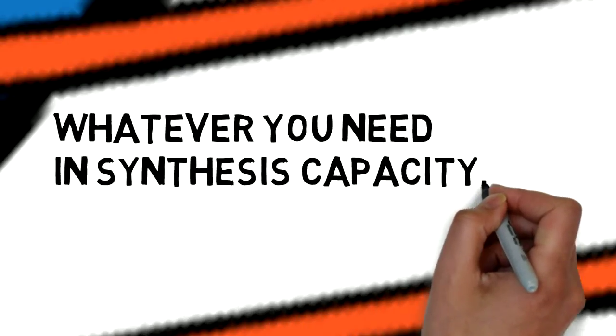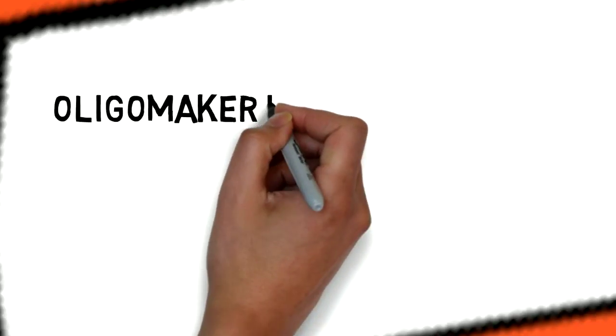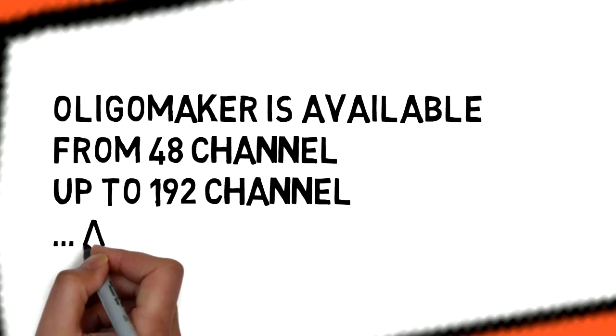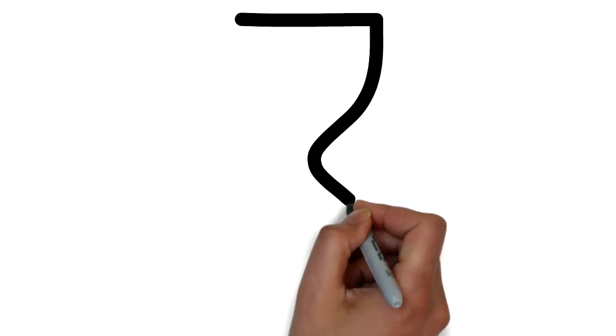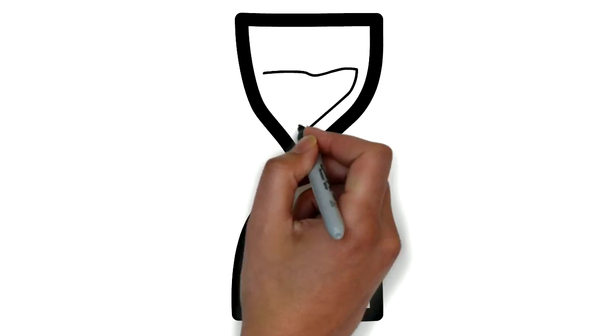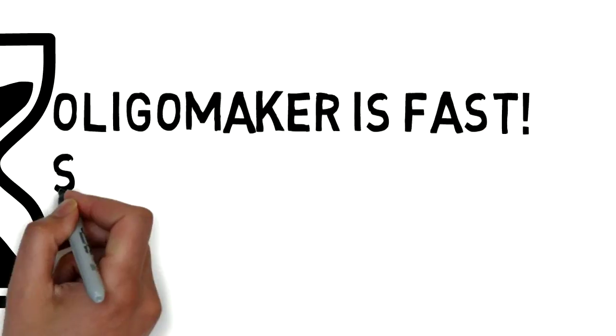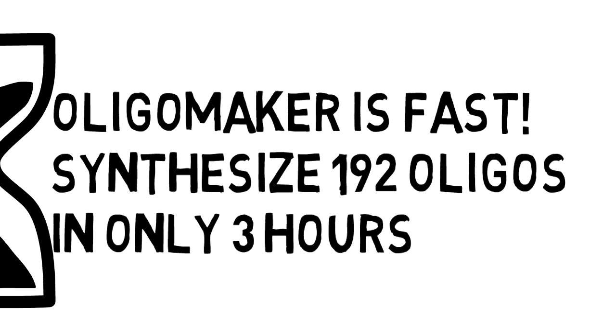Whatever you need in synthesis capacity, OligoMega is the answer. OligoMega is available in sizes from 48 channels, 96 channels, and up to 192 channels, all in the same synthesizer. When it comes to speed, OligoMega is fast. It will synthesize 192 oligos in only 3 hours.